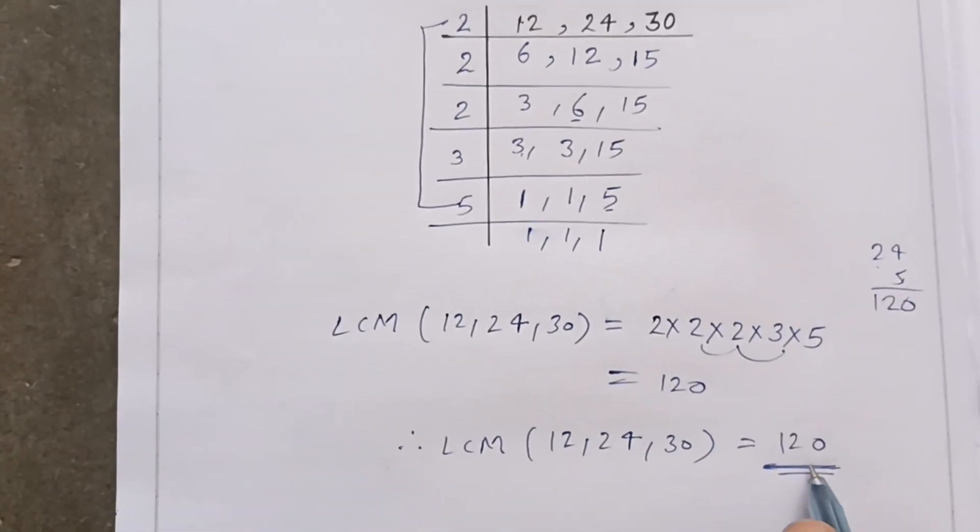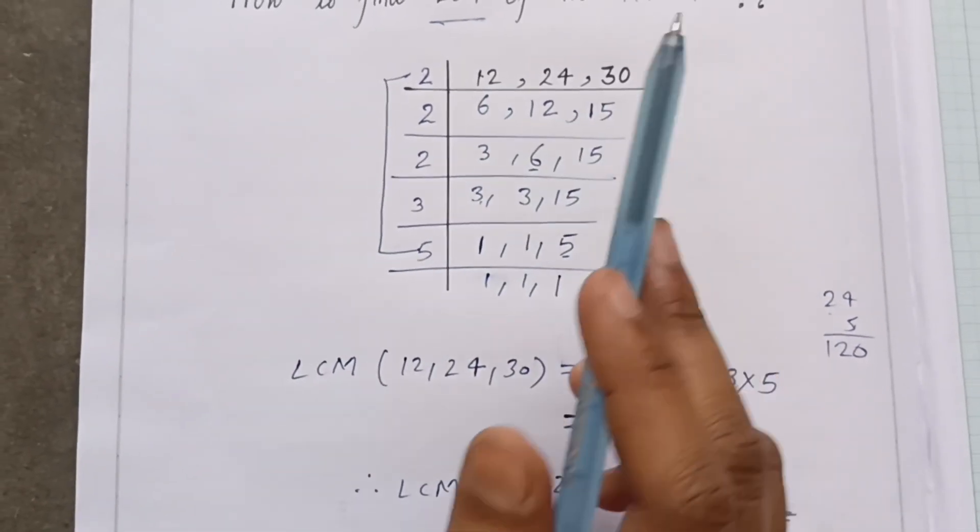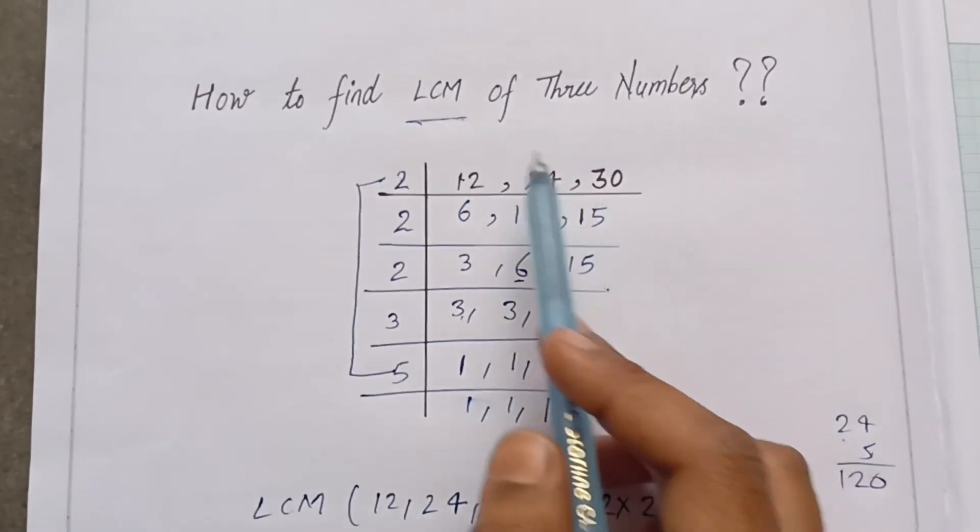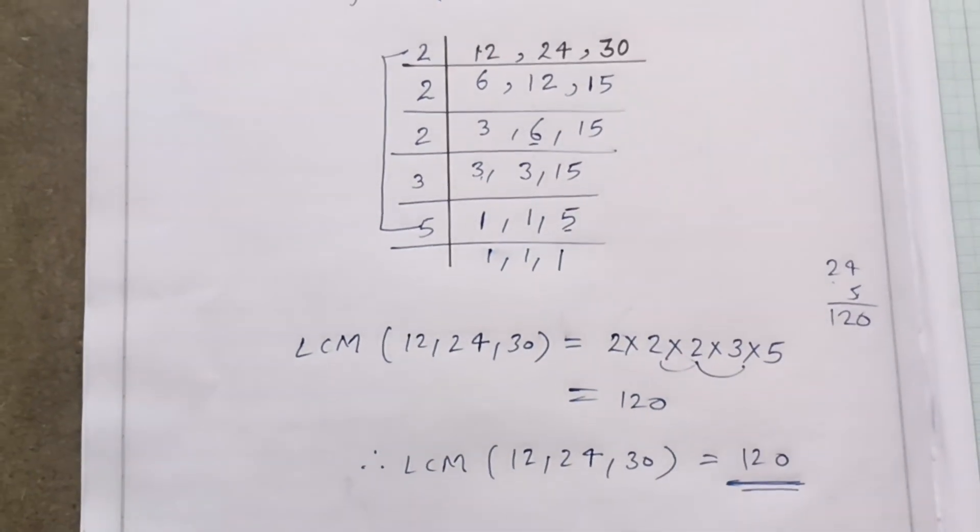The LCM of 12, 24, and 30 is 120, okay? So simply, what do we do? We multiply the divisors and we will find the LCM, okay? I hope you will understand and thank you.